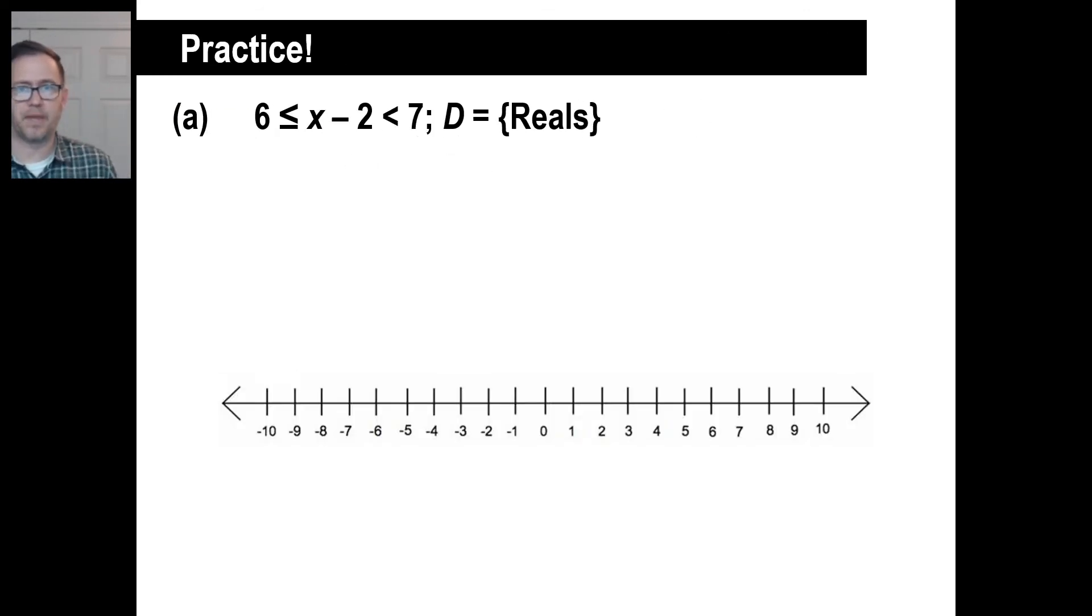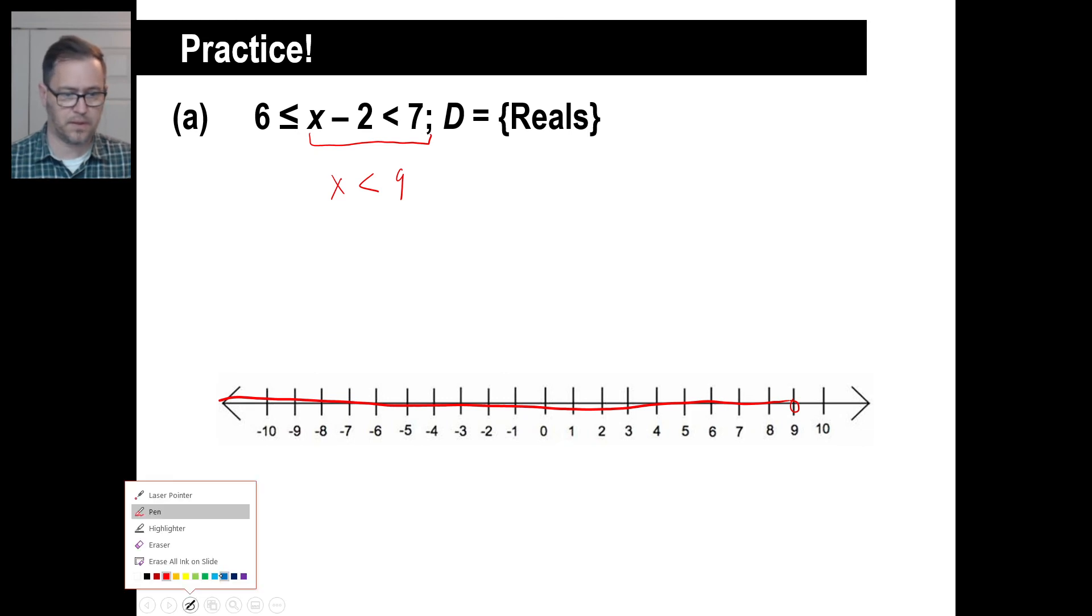Okay. Try A and B and pause it and try A. We'll do this in a second together. All right. Well, let's do this part first. This x is less than 9, which will be the first part. All right. So we're allowed to use all real numbers. So there's the 9. And it's everything all the way there. Okay. I'll just do a different color here.